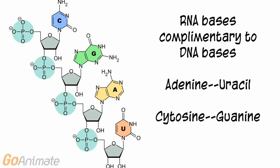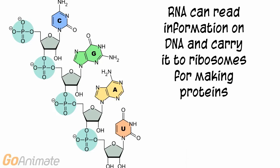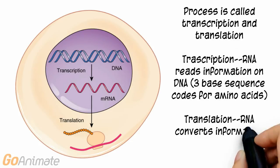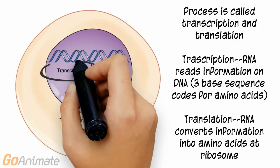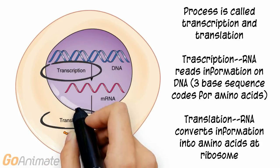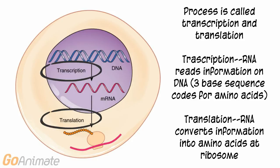Adenine can pair with uracil, and guanine with cytosine. RNA can read information on DNA and carry it to ribosomes for making proteins. This process is called transcription and translation.